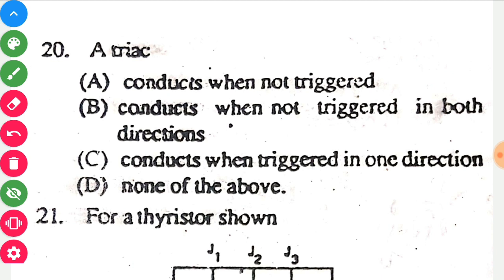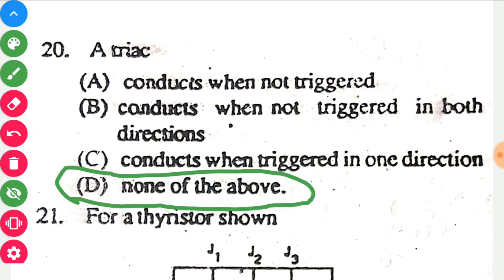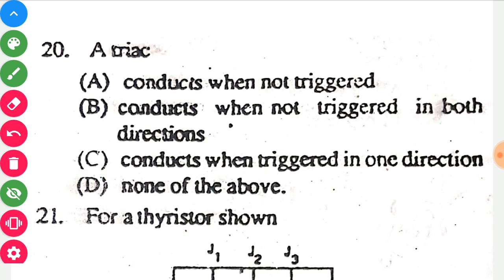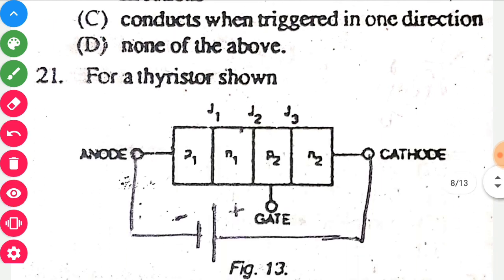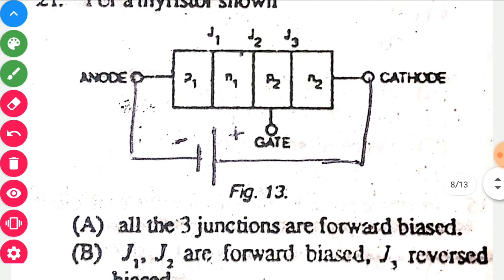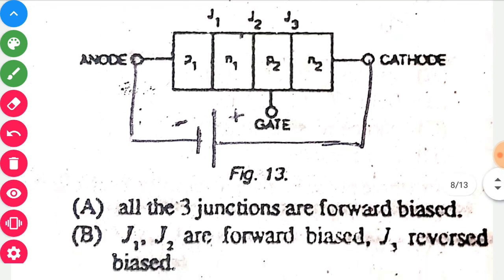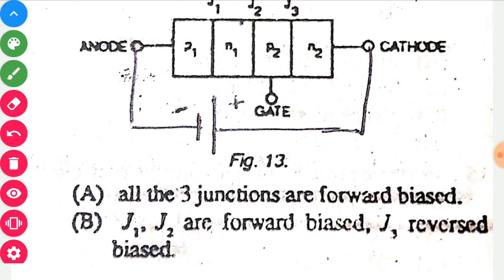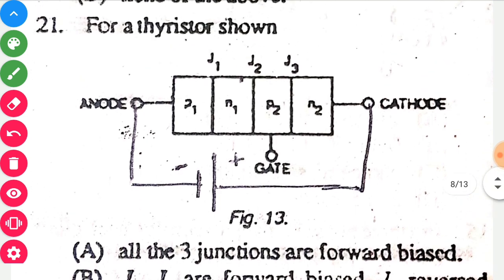Coming towards the 20th question: a triac only conducts when triggered by a pulse on the gate terminal, and it conducts in both directions. Since no option fully describes this, we will go with option D — none of the above.